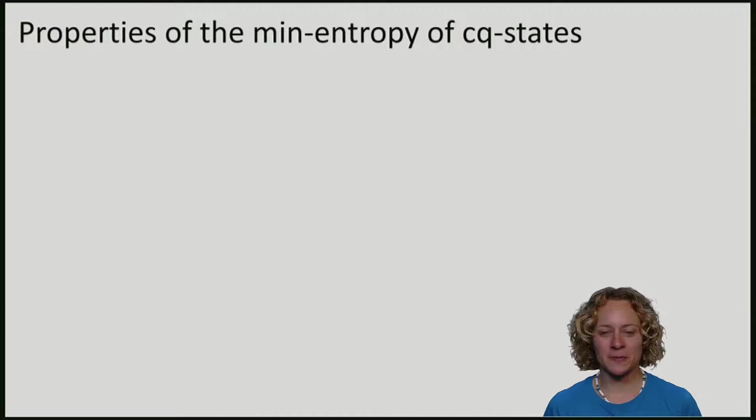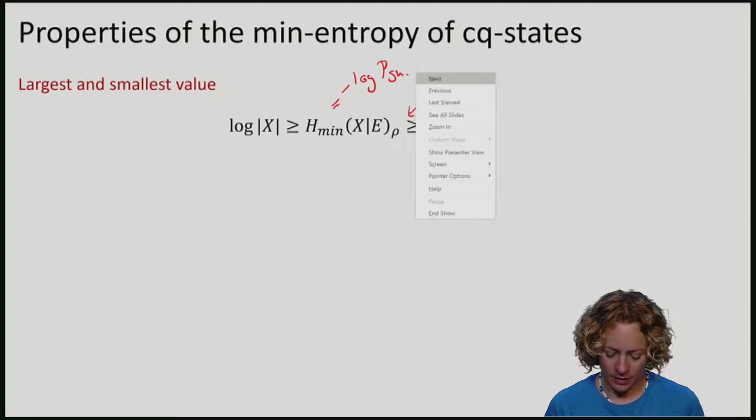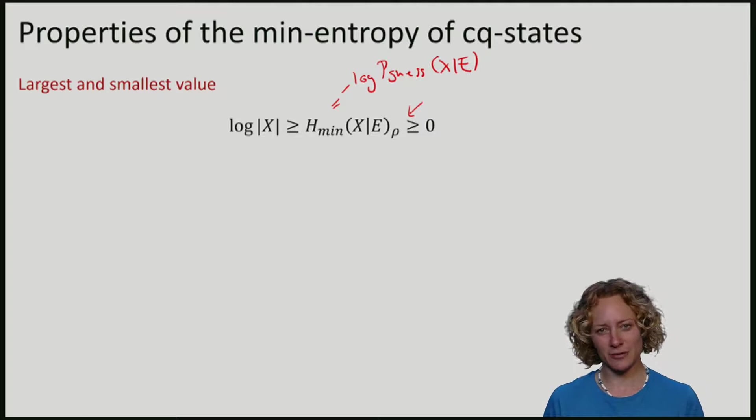For example, you might be wondering about what is the largest and what is the smallest value that this min-entropy can take. It turns out that the min-entropy of CQ states is always positive. And remember that the min-entropy is minus the log of the guessing probability. So the min-entropy is 0 precisely if the probability of guessing is 1. Eve knows everything.